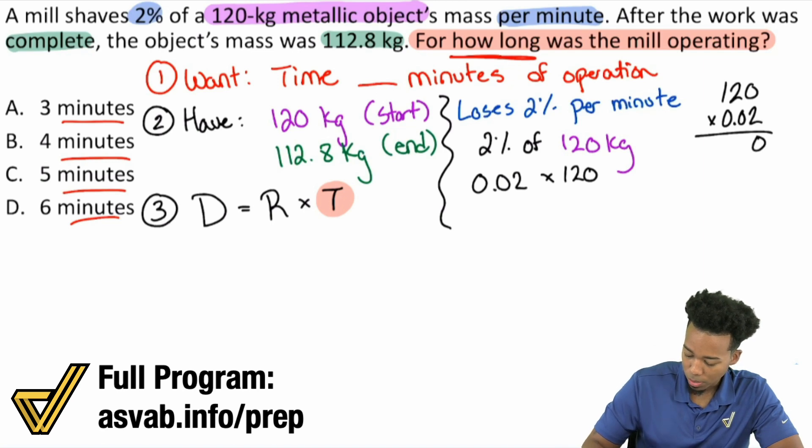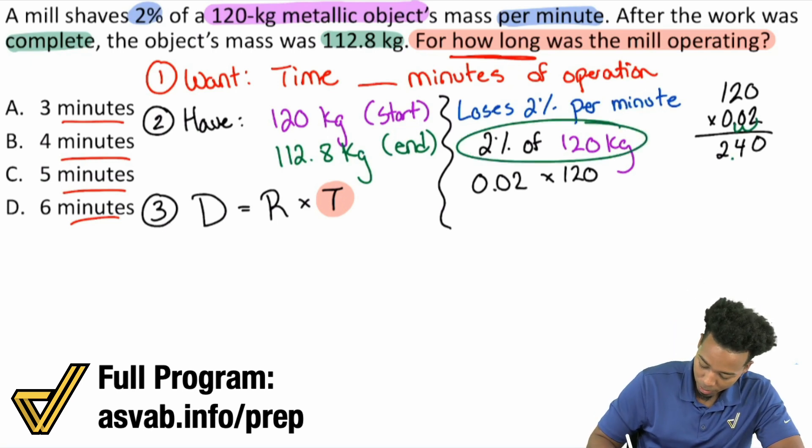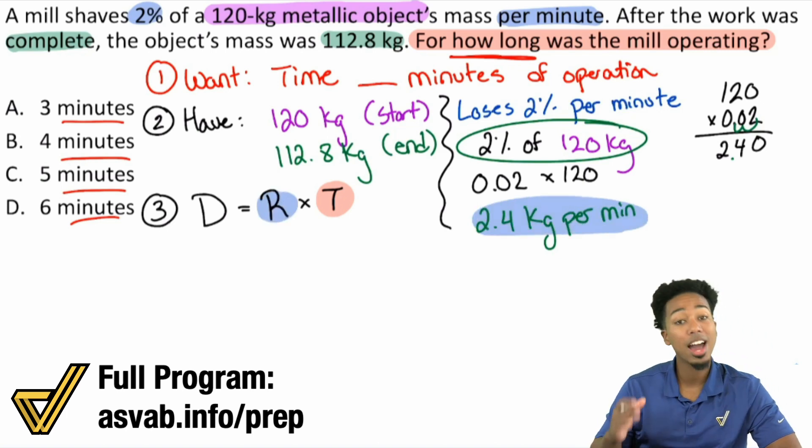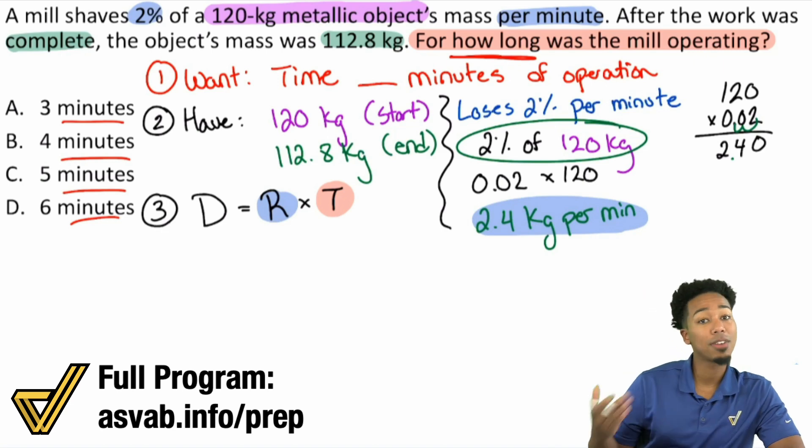So boom, 0 times 2 is 0. 2 times 2 is 4. 1 times 2 is 2. And we notice that we have 1 and 2 decimal places right there. So we have 2 decimal places right there. So this right here is 2.4 kilograms per minute. This right there, that is your rate. That is your rate. We now have the rate. And now we need to find the distance.